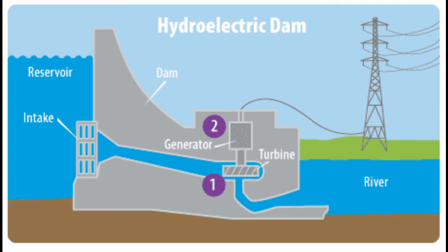Hydroelectric dams are composed of three main components: a reservoir, turbine, and generator. They work together by utilizing gravity and the reservoir's large drop in elevation to turn a water turbine below, powering a generator, which converts the resulting kinetic energy into electricity.